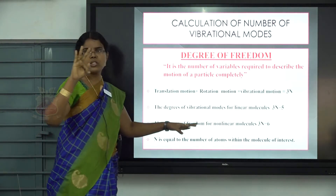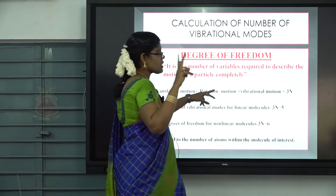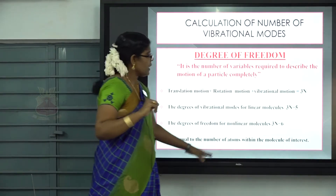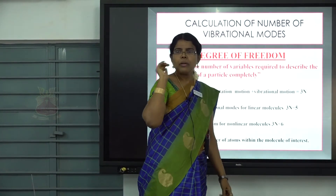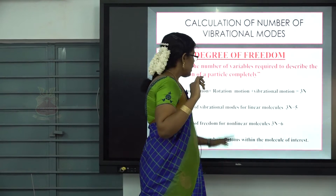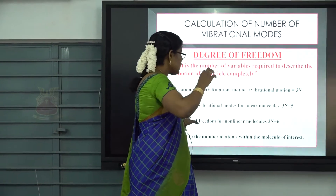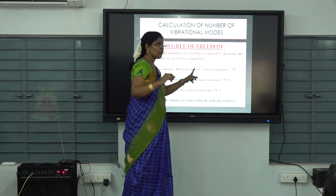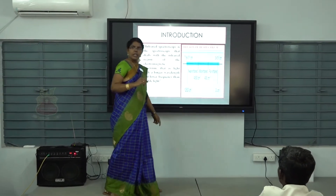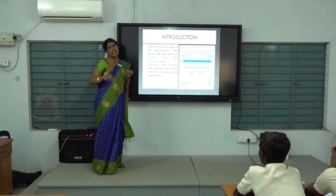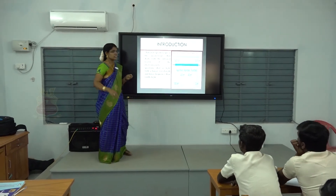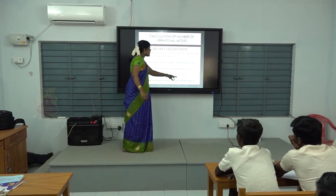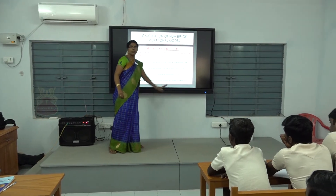For a linearly arranged molecule, the possible translational motions are 3 and rotational motions are 2, so the possible vibrational motions are 3n minus 5. For non-linearly arranged molecules, the possible vibrational motions are 3n minus 6, where n is the number of atoms in the molecule.